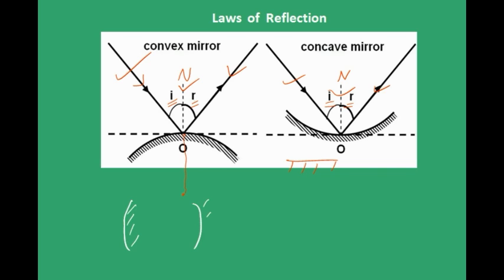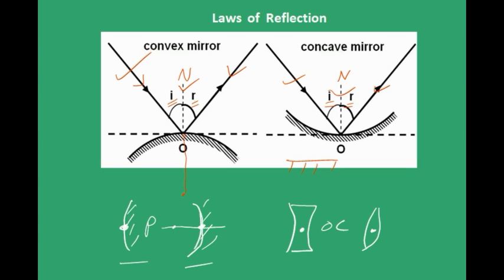The geometric center of a spherical mirror — whether convex or concave — is known as the pole. In the case of lenses, such as a convex or concave lens, the geometric center is known as the optical center. The line joining the pole and the center of curvature is known as the principal axis.